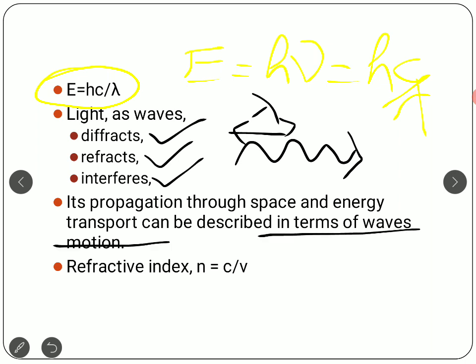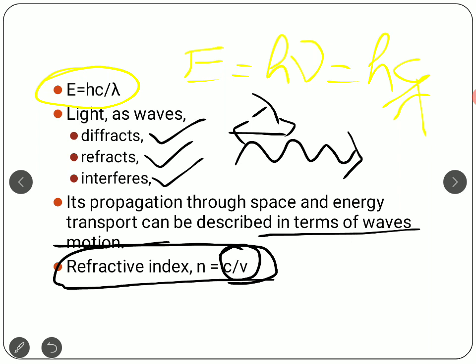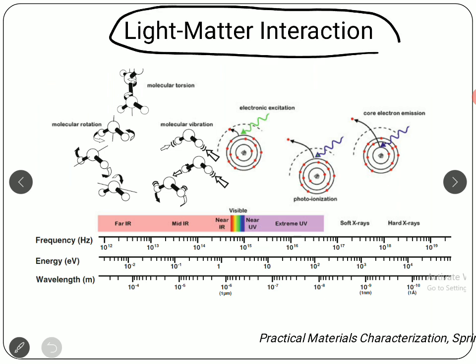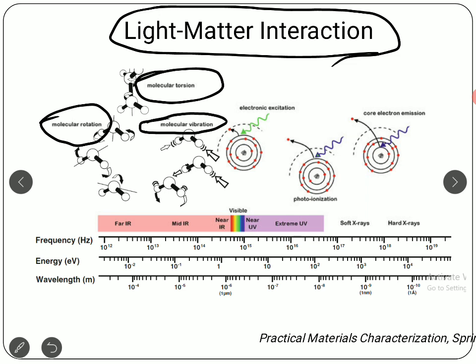From studying the wave nature of the material we can find the refractive index, which is defined as the speed of light in vacuum divided by the speed of light in the medium. If we detect the change in the speed of light, we can find the refractive index of the sample. When light interacts with matter — in light-matter interaction — a number of phenomena can come into picture. We have something called molecular torsion, which can result in rotating the molecule — molecular rotation — or they might result in molecular vibration.